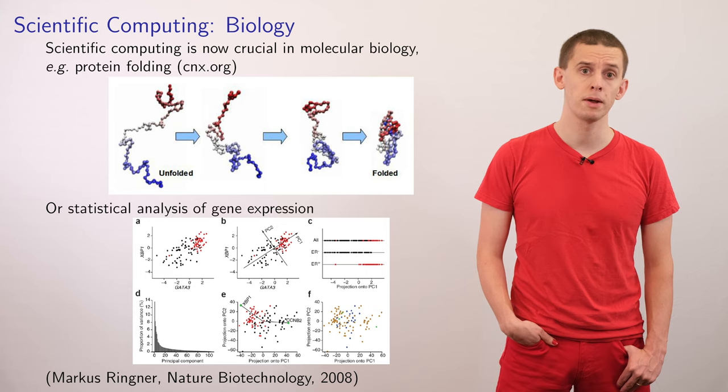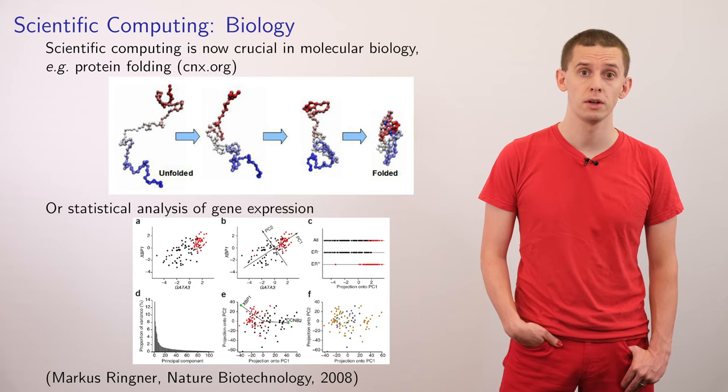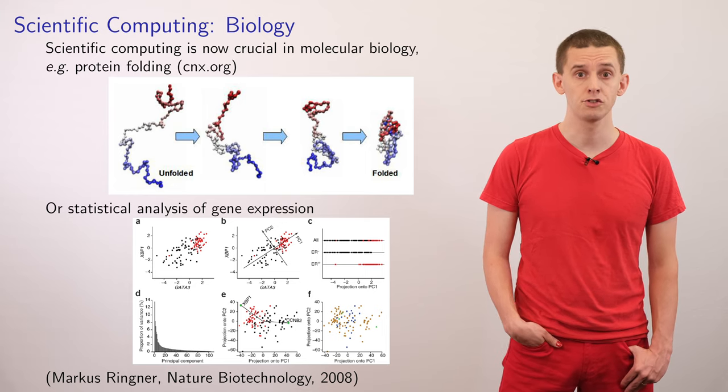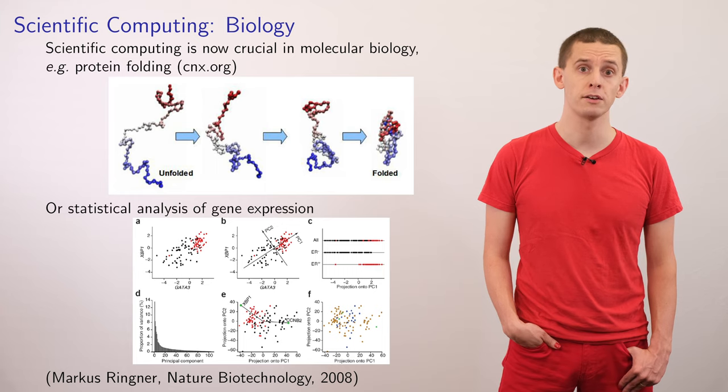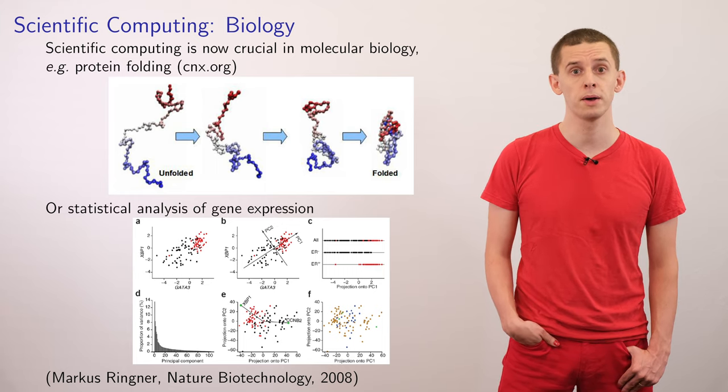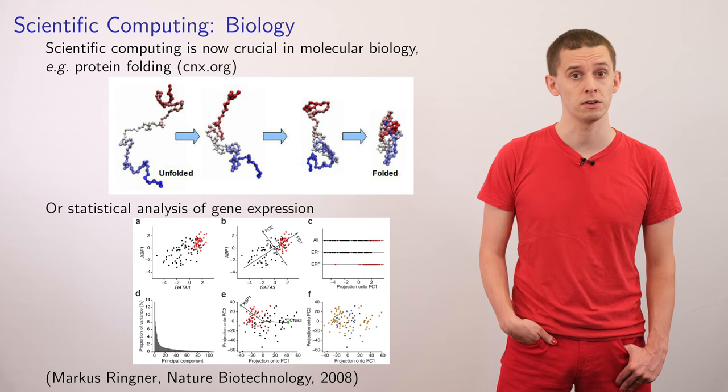For example, we can use computational methods to predict how proteins might unfold, and it provides us insight into these structures that will be very difficult to directly observe. In addition, there are many areas of biology where we're able to collect data on a huge scale, such as in gene expression, and computational methods really allow us to process this data and extract insight.